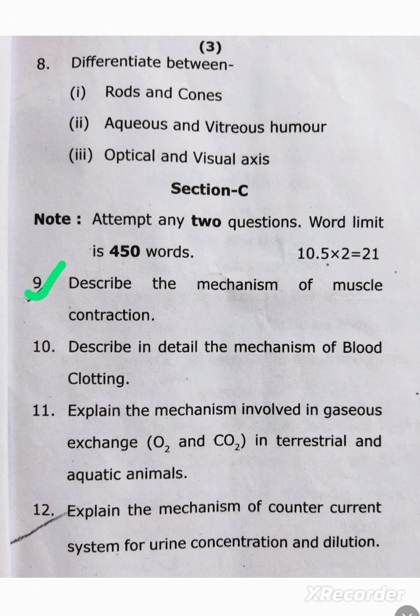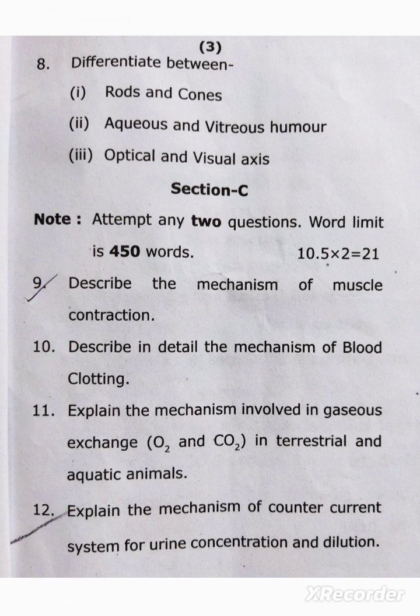Question number nine: describe the mechanism of muscle contraction. Question number ten: describe in detail the mechanism of blood clotting. Question number eleven: explain the mechanism involved in gaseous exchange of oxygen and CO2 in terrestrial and aquatic animals. Question number twelve: explain the mechanism of the counter current system for urine concentration and dilution.